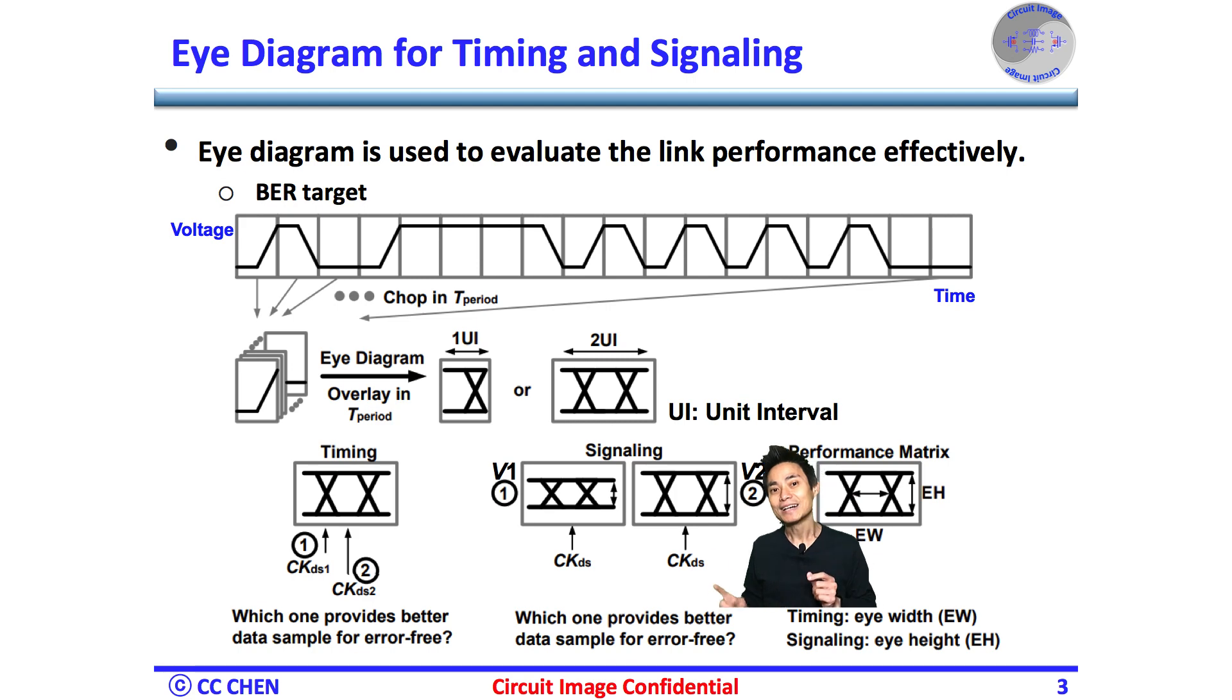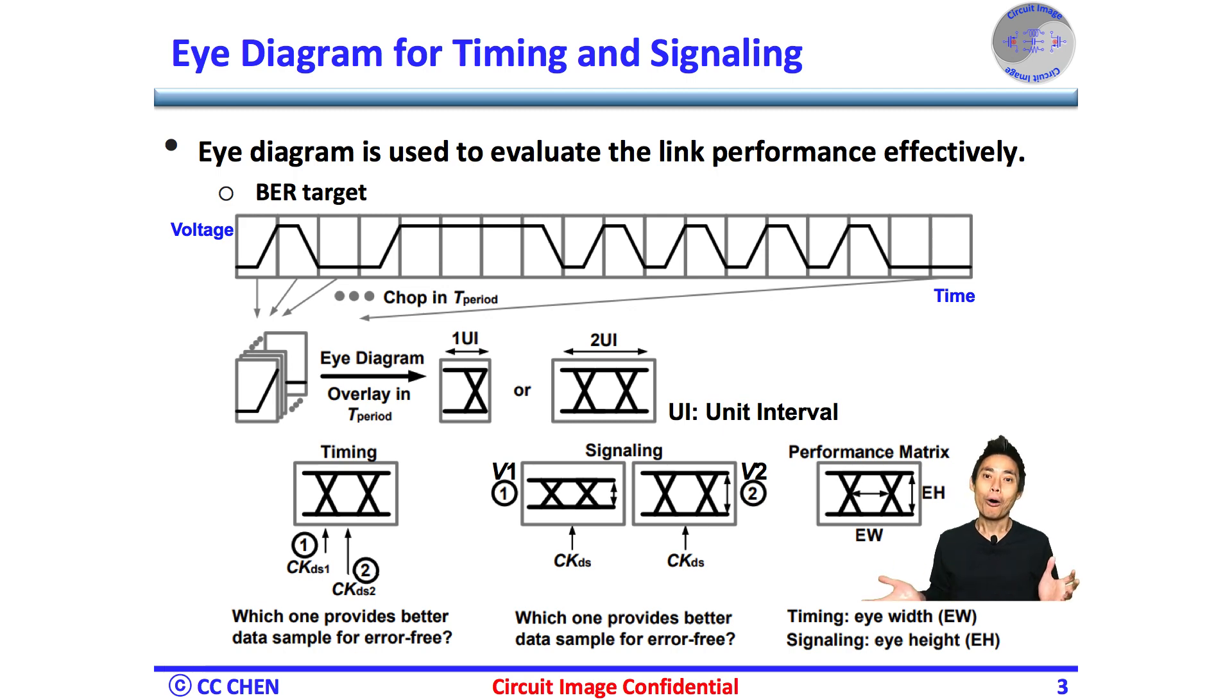Right, VS2 has a larger amplitude of the sample voltage, and the greater SNR should be better to achieve a low bit error rate target than VS1 smaller amplitude. So overall, the performance metric or margin can be summarized by the eye height and the eye width is easy.